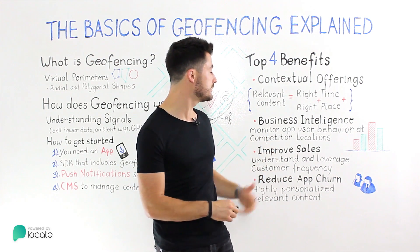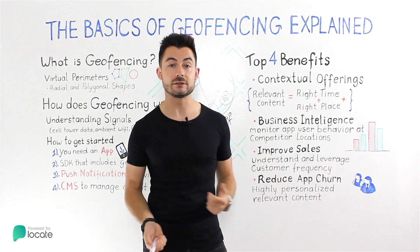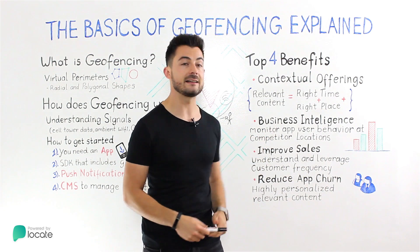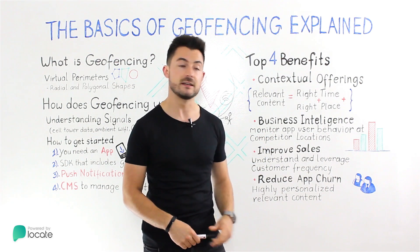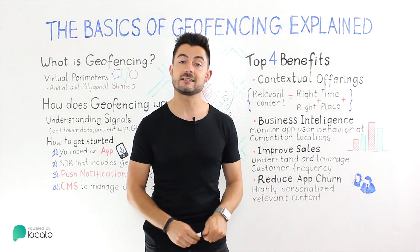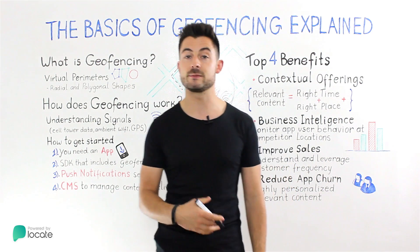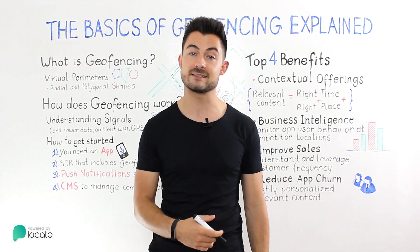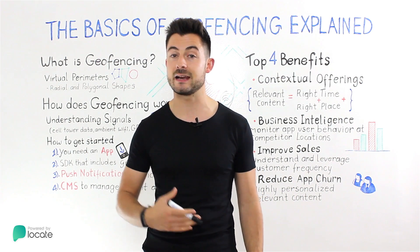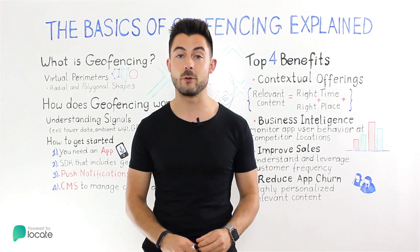You can also use geofencing to improve your sales, bring people into your location, increase foot traffic, and leverage customer frequency data combined with competitive data. And lastly, you can improve app churn — when you engage customers based uniquely on their own context and where they show up in the world, it makes your app seem like it has higher utility value, keeping customers coming back for more.